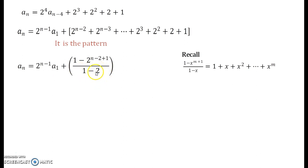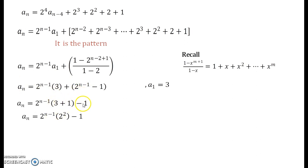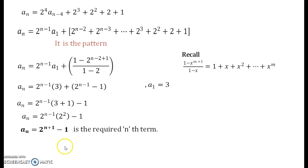Now 1 minus 2 gives minus 1. Substituting a₁ = 3, we get 2ⁿ⁻¹ · 3 + (1 − 2ⁿ⁻¹) / (−1), and the terms get swapped due to the minus 1 in the denominator. Taking 2ⁿ⁻¹ common gives (3 + 1) which is 2², so solving further we get aₙ = 2ⁿ⁺¹ − 1. That is the nth term of the sequence — our recurrence relation is solved, and we can now find any term using this formula.